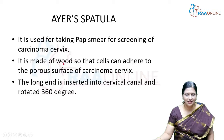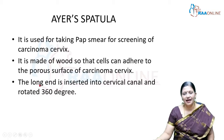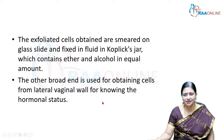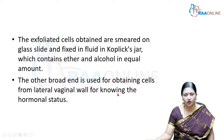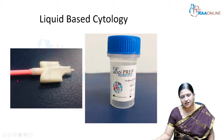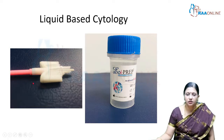The Ayre's spatula is made of wood so that cells adhere to its porous surface. The long end is inserted into the cervical canal, rotated 360 degrees, and exfoliated cells are smeared on the glass slide and fixed in the Coplin jar fluid containing alcohol in equal amounts. The other broad end is used for obtaining cells from the lateral vaginal wall to assess hormonal status.